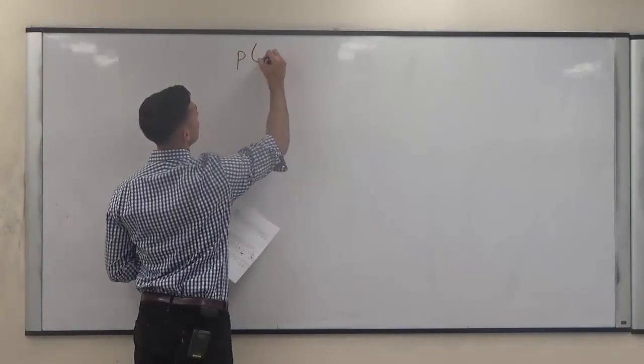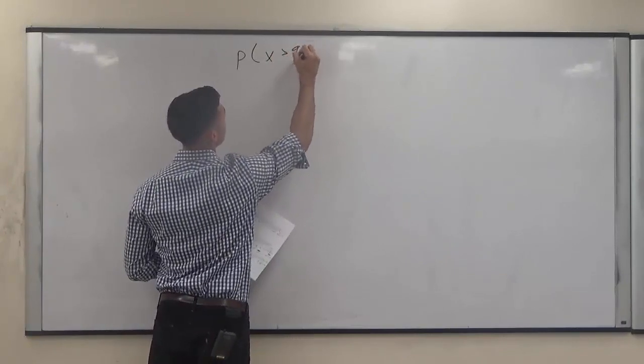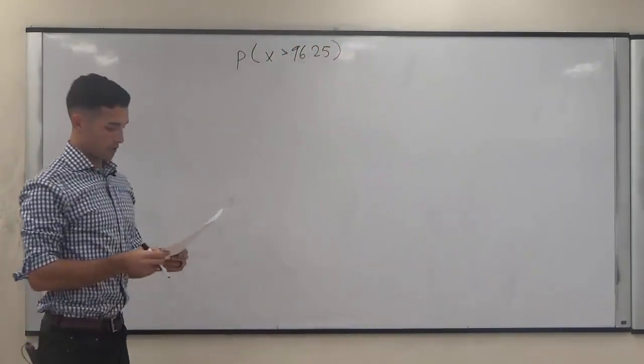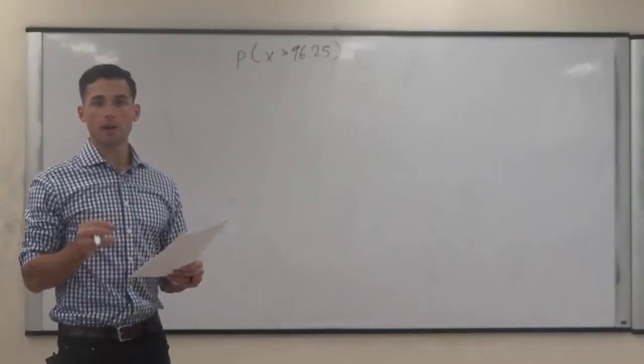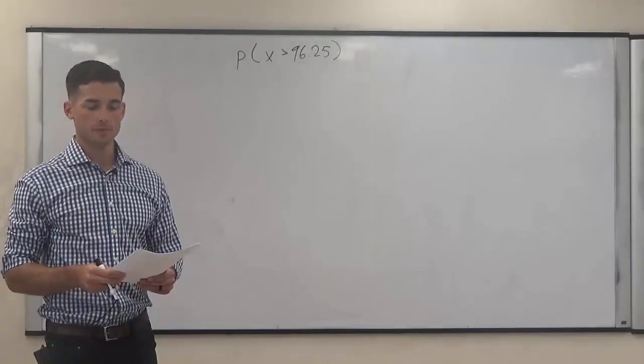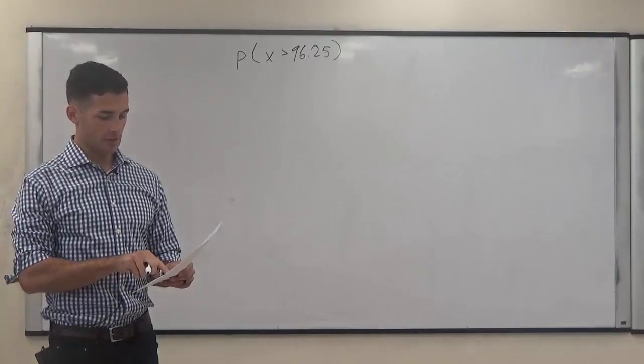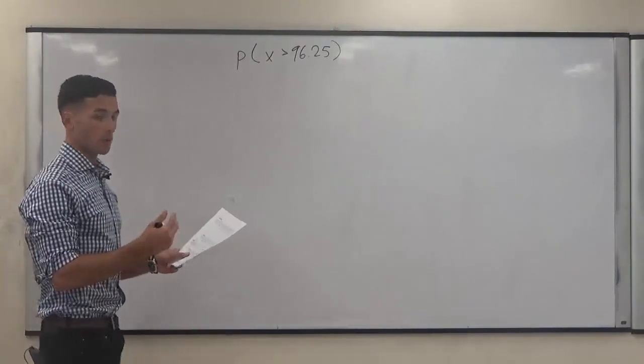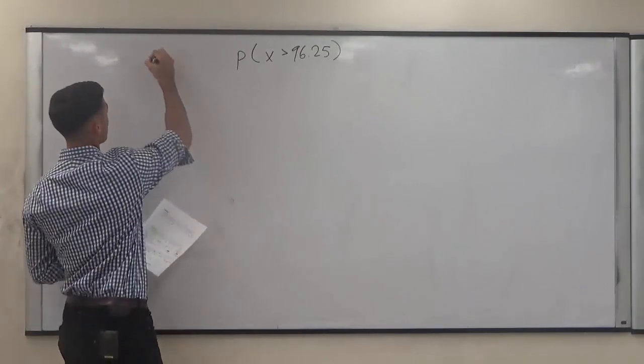So the probability that x is greater than 96.25 inches. Because we're pulling 40 boards here, this is a sampling problem. We're going to use the central limit theorem. And we also see here in the problem it says it's normally distributed, so it doesn't matter what our sample size is to be able to complete the problem.